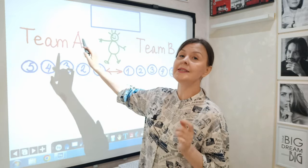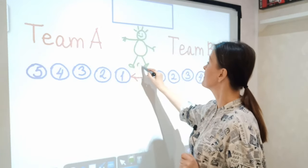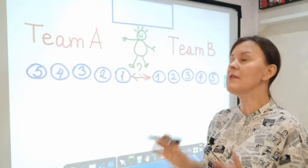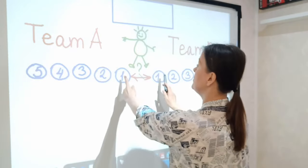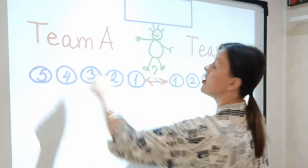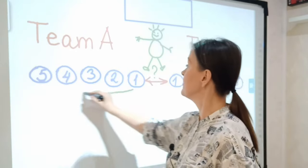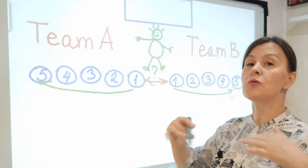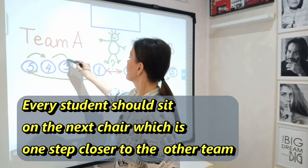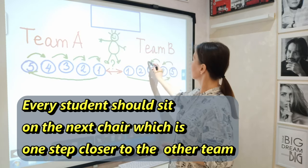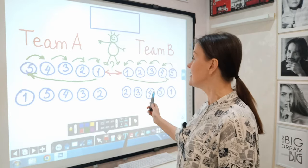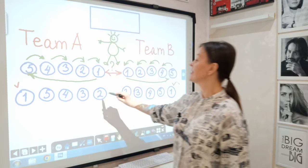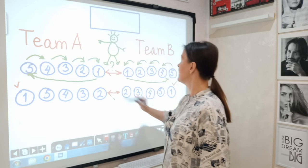For example, students from team A will ask questions and students from team B will answer them in the first round of the game. So student 1 from team A says, 'What's your favorite food?' And student 1 from team B should quickly answer something like, 'My favorite food is ice cream.' Both students then move to the end of the columns, while all the other students move forward. Students who started the game are now at the end of the rows, and students number 2 will ask and answer questions.